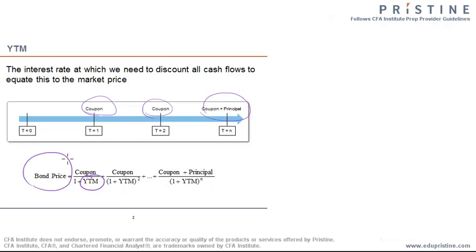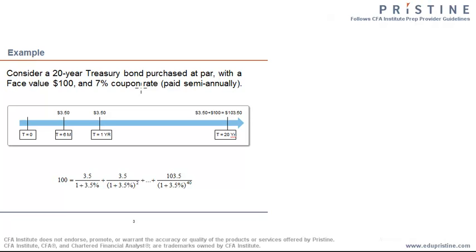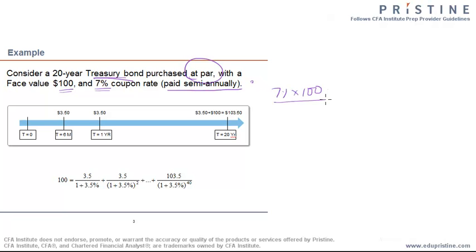To explain what is the reinvestment assumption, I'm going to take the help of an example. Consider a 20-year Treasury bond purchased at par with a face value of 100 and a 7% coupon rate paid semiannually. Note that Treasury bonds have coupons paid semiannually, and you are expected to know this in the exam. Every six months, the bond pays a coupon of 7% times 100, the par value, divided by 2 because it's semiannual — so $3.50.